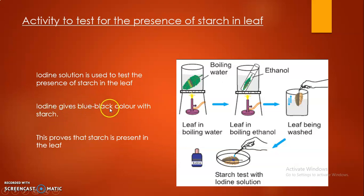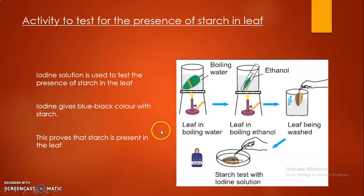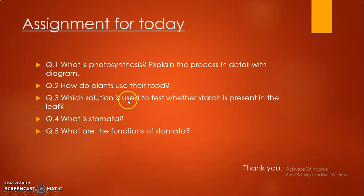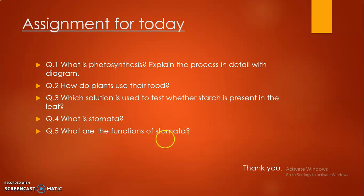I hope you have understood the video and the chapter. We will continue the chapter in the next video. Till then, please solve these assignment questions: Question 1 — What is photosynthesis? Explain the process in detail with a diagram. Question 2 — How do plants use their food? Question 3 — Which solution is used to test whether starch is present in the leaf? Question 4 — What is stomata? Question 5 — What are the functions of stomata? Please solve these questions in your notebook. Thank you.